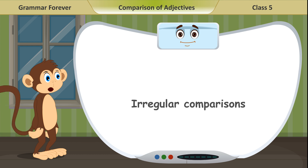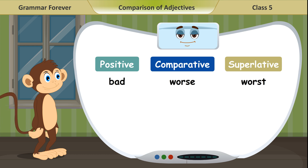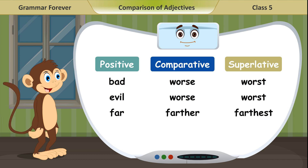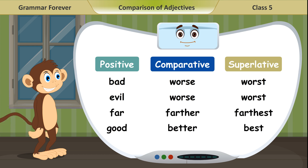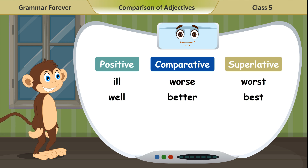Irregular comparisons: Bad, worse, worst. Evil, worse, worst. Far, farther, farthest. Good, better, best. Ill, worse, worst. Well, better, best.